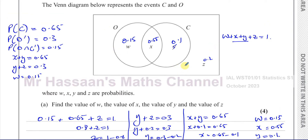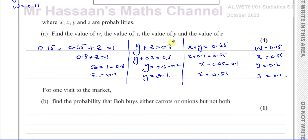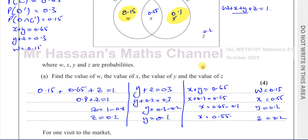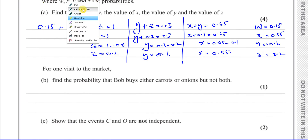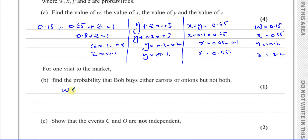Part B says find the probability that Bob buys either carrots or onions but not both. So that's carrots only or onions only — without the overlap. It's going to be W plus Y, which is 0.15 plus 0.1, which equals 0.25. So that's the answer to part B.